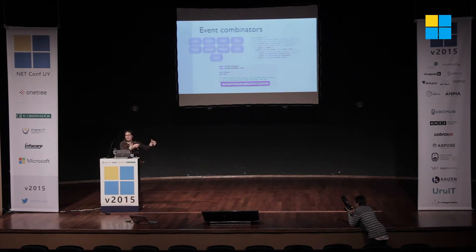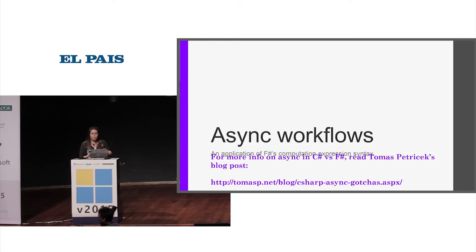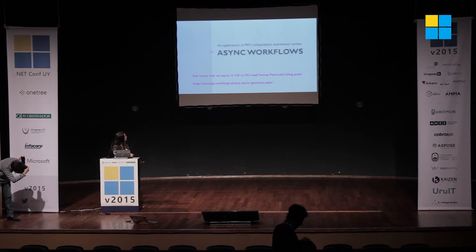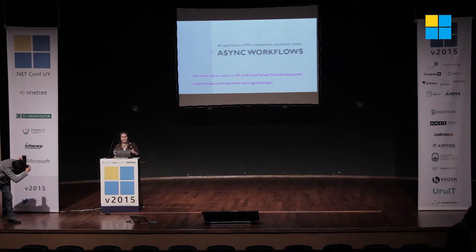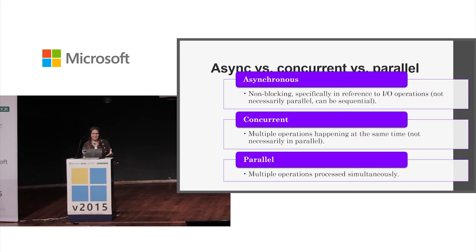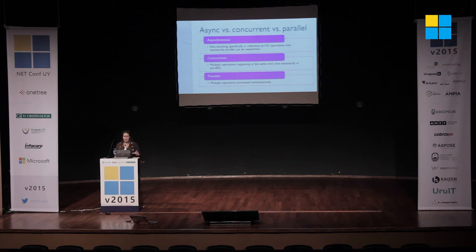Before we move on to message-driven, I want to look at async workflows. It's an application of F#'s computation expression syntax. Async in F# and async in C# are similar but Tomas Petricek points out some very interesting differences. Let's first look at the difference between async, concurrent, and parallel. Asynchronous just means non-blocking — specifically usually in reference to IO operations. It can be sequential; it only means it does not block. Concurrent means multiple operations happening at the same time — not necessarily in parallel, but maybe a little bit of one, then a little bit of another, back and forth.